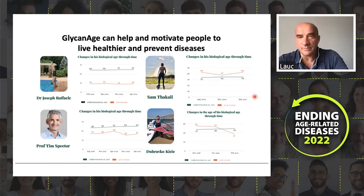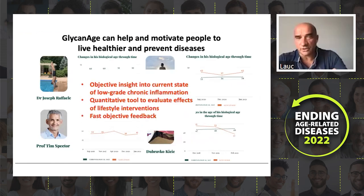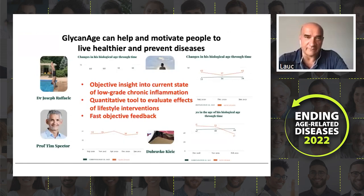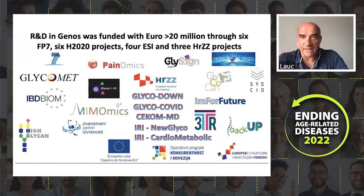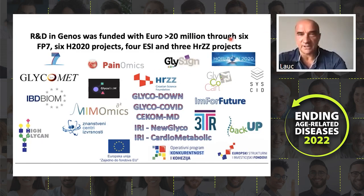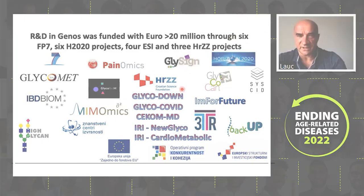The glycan age can really help here because it can motivate people to live healthier. We know what is healthy, but we generally don't do it — because the payback comes in several decades and we are not that patient. But with optimal quantification of what is going on, and early feedback, people can get motivated much better. We have received over 20 million euros in research grants which enabled all this research. Thank you for your attention — happy to answer questions if there is still time.